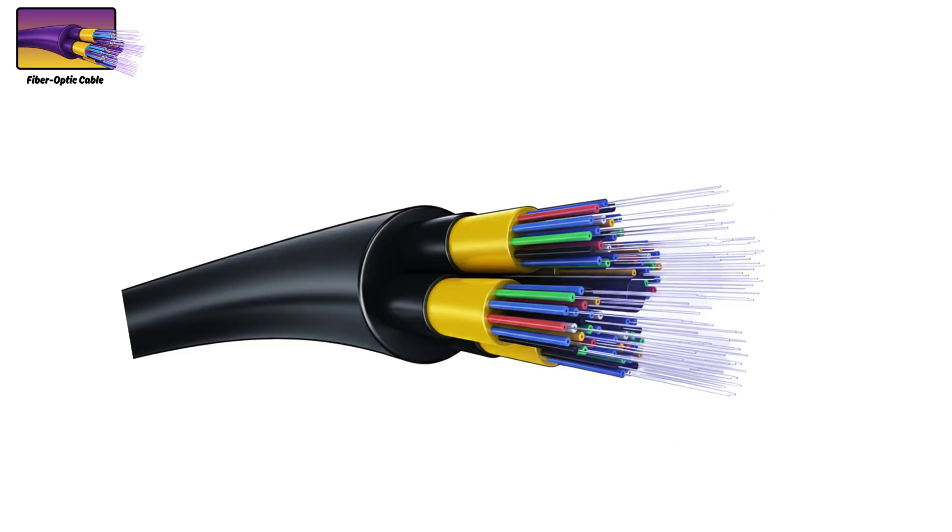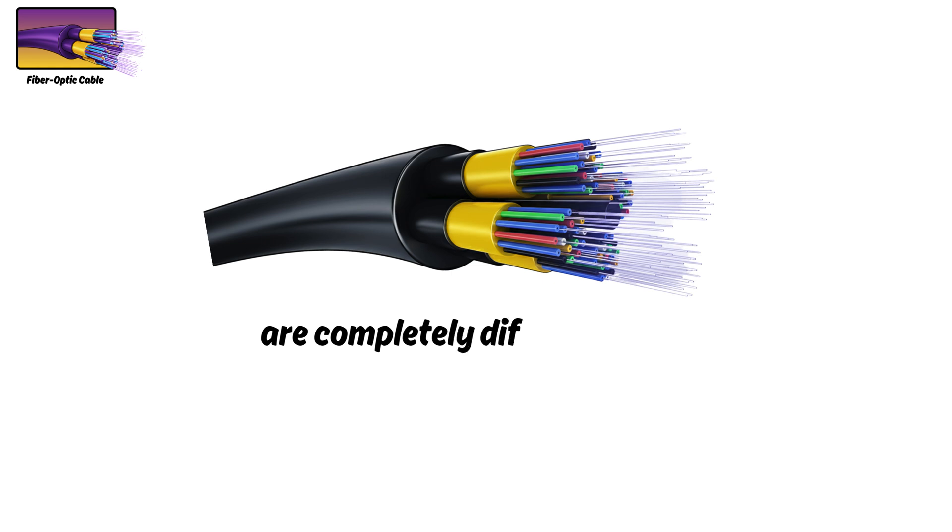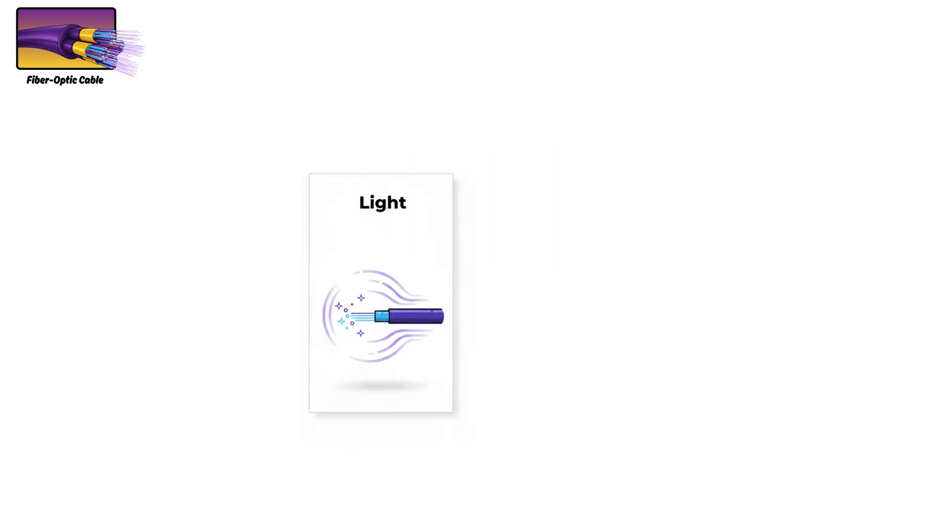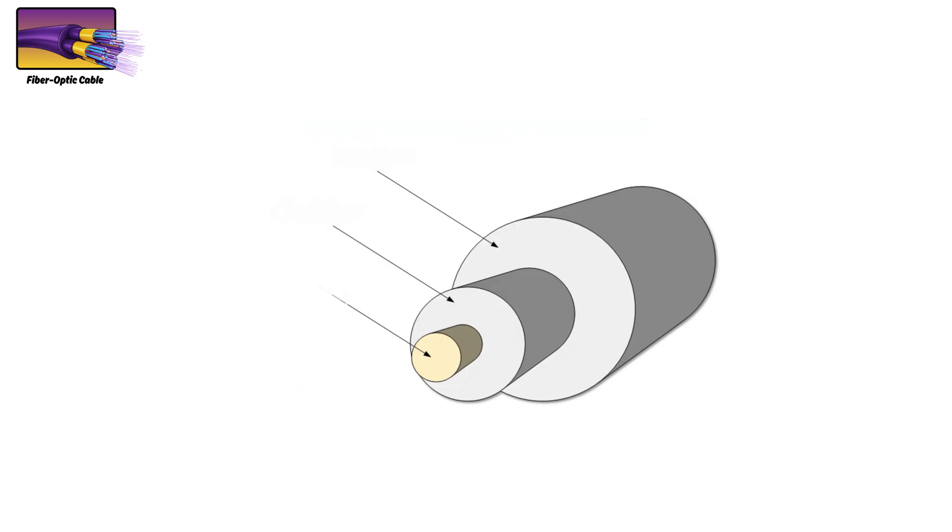Fiber cables. Fiber cables are completely different from traditional copper wiring, because they transmit data using light instead of electricity. Inside the cable is a tiny glass core where light pulses travel, surrounded by a cladding layer that keeps those pulses from leaking out.